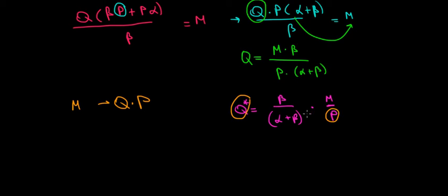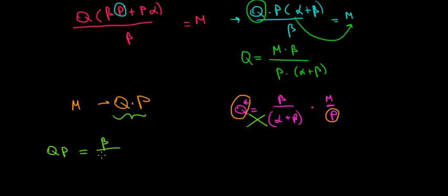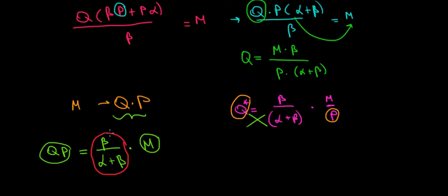Let's take price on this side — let's basically do a cross product here. We would have Q times P. That's what we want — that's the money that we spend on pizza. And what are we left with? We're left with beta divided by alpha plus beta, times M. We also see the M. So we have the relationship that we said. Beta divided by alpha plus beta is going to be the share, the proportion from our money that we spend on this good, on this pizza.